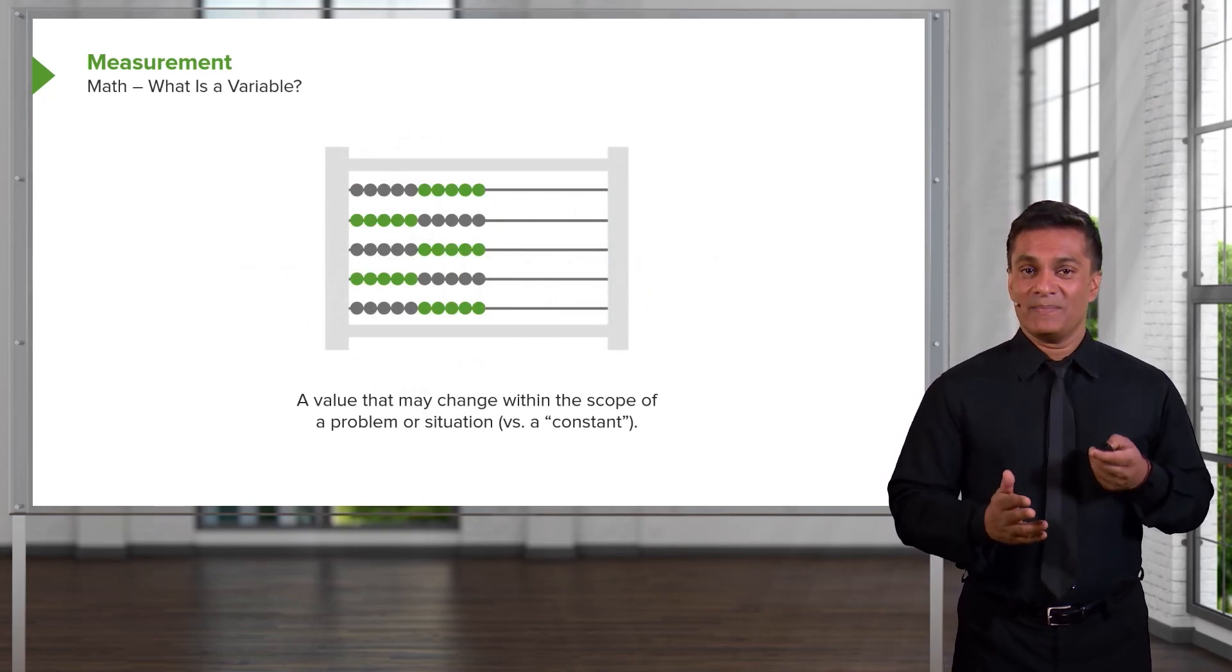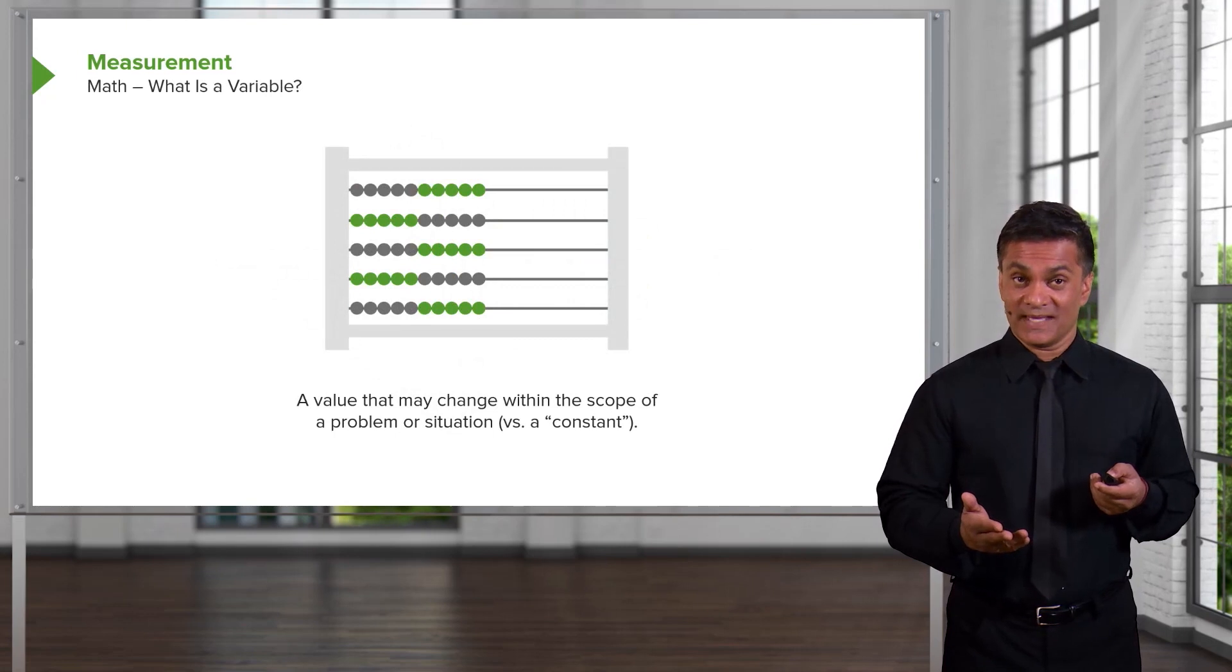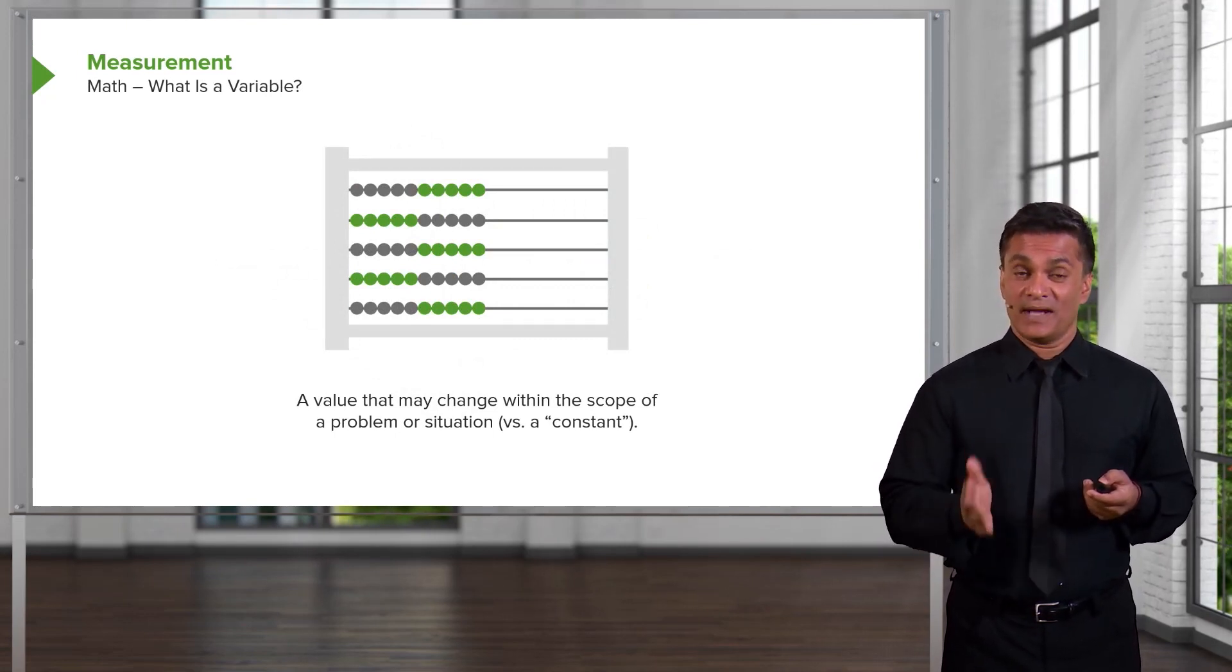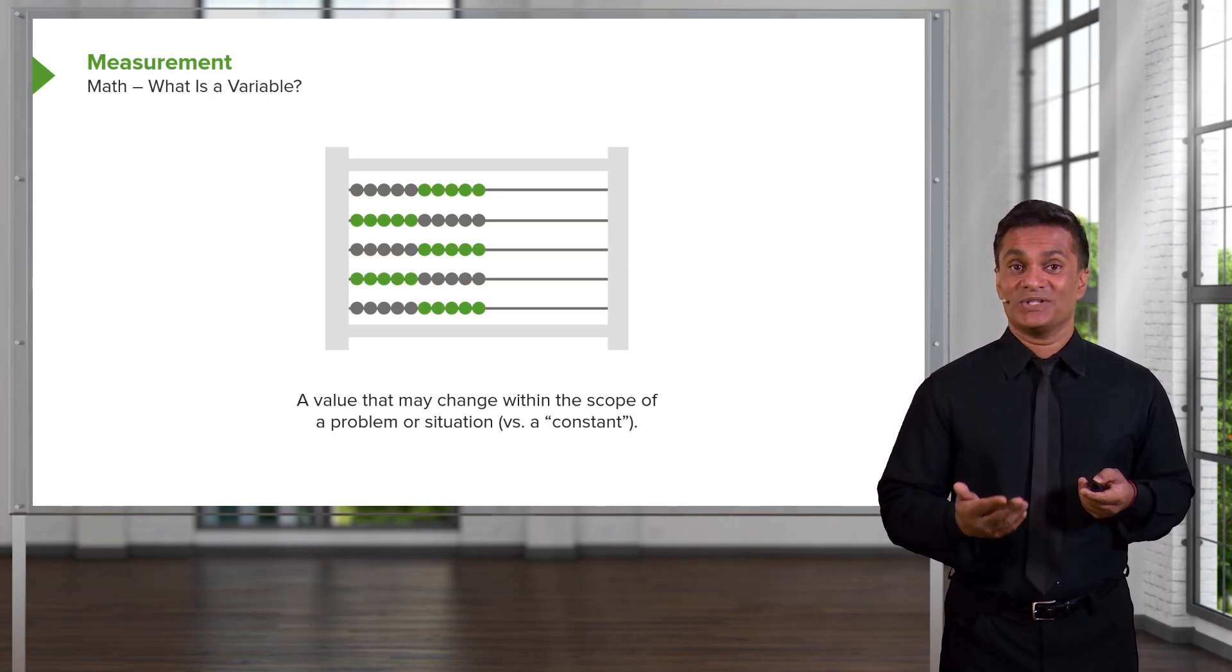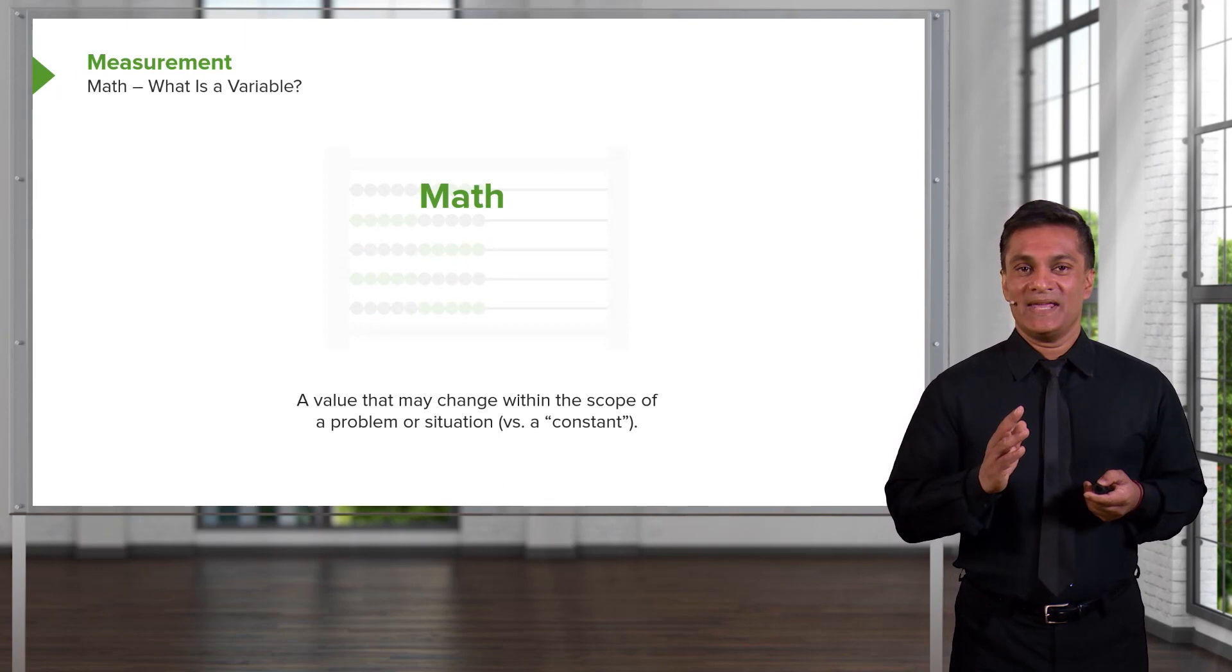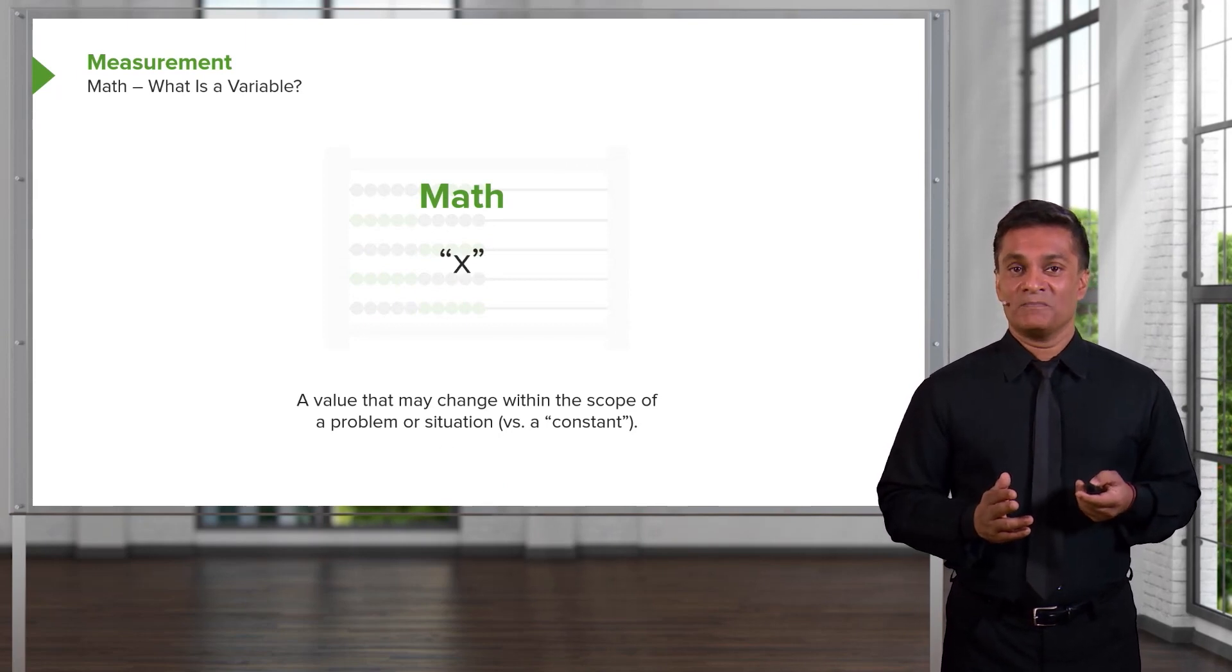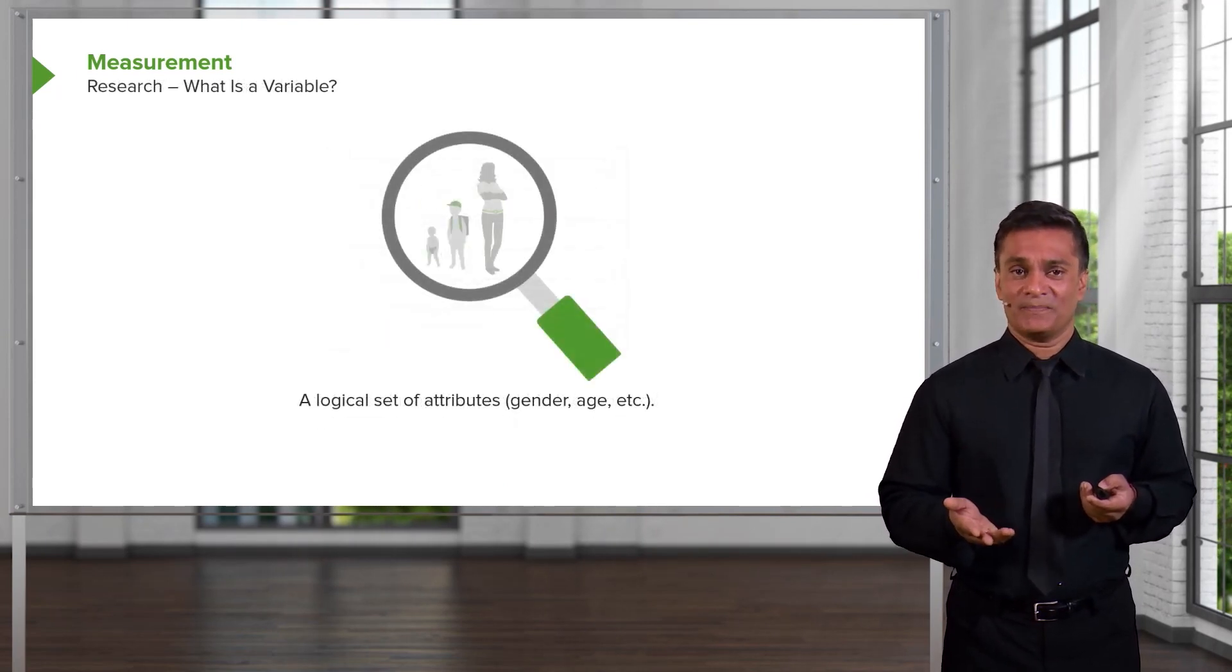So a value that may change in the scope of a problem is a variable. That's what a variable is. It's something that's changing all the time as opposed to a constant. There are constants in life. There are variables in life. Data analysis is all about processing the relationship between variables and constants between each other. In the world of mathematics, a variable can be written as x. It's a placeholder. It's just a registry that we later fill with a number and perform functions on.